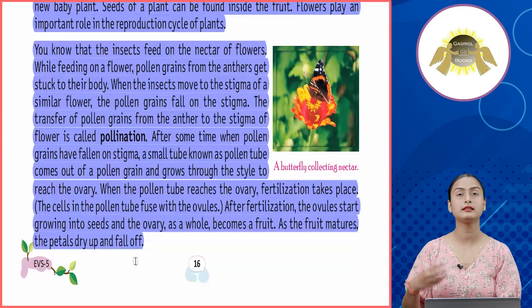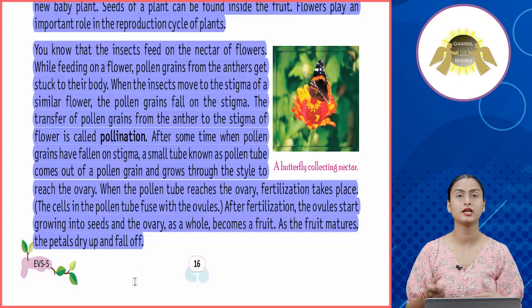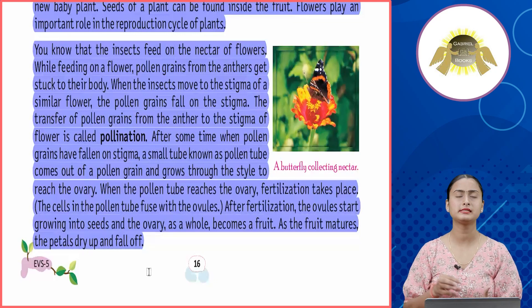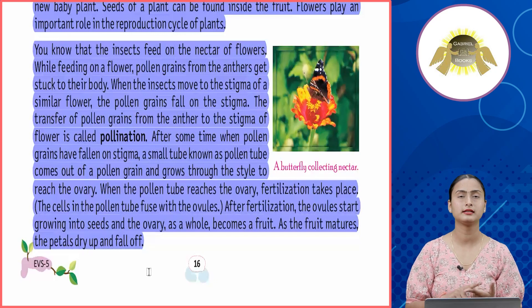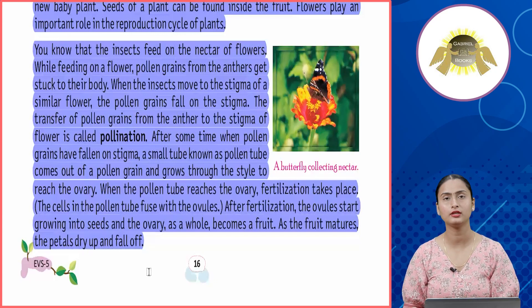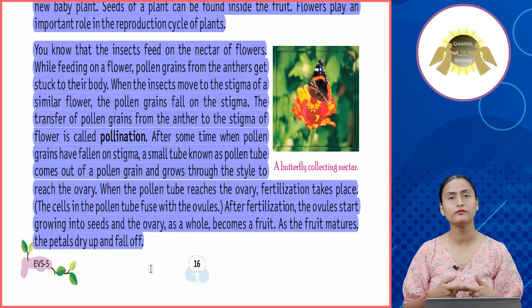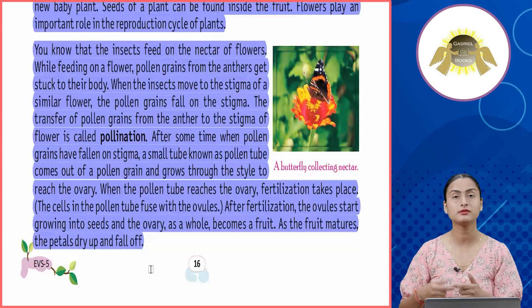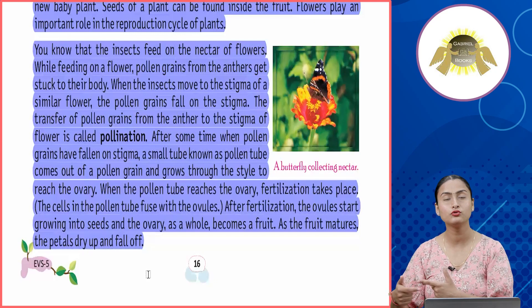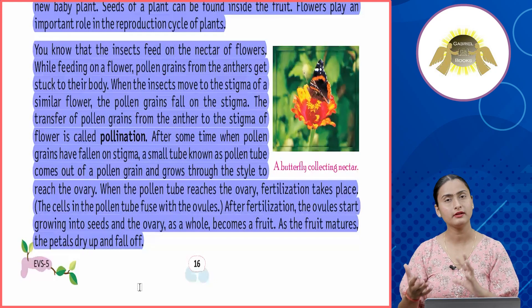As the fruit matures, the petals dry up and fall off. In summary, insects feeding on nectar cause pollen grains from the anther to stick to their bodies. When they visit another flower, the pollen reaches the female reproductive organ, fertilization occurs in the ovary, and a new plant begins. The ovules mature into seeds, the ovary becomes a fruit, which eventually dries up and falls.